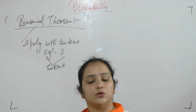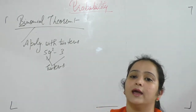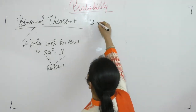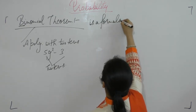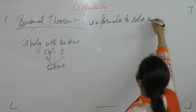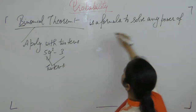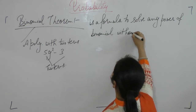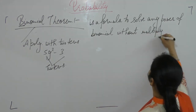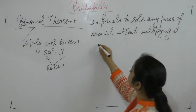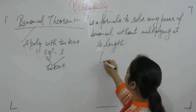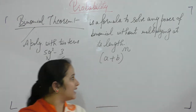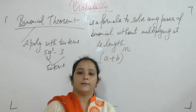The binomial theorem is a formula that allows us to solve any power of a binomial without multiplying it out at length. So if we have two terms A plus B raised to the power n, we can solve it without lengthy multiplication — that is the binomial theorem.